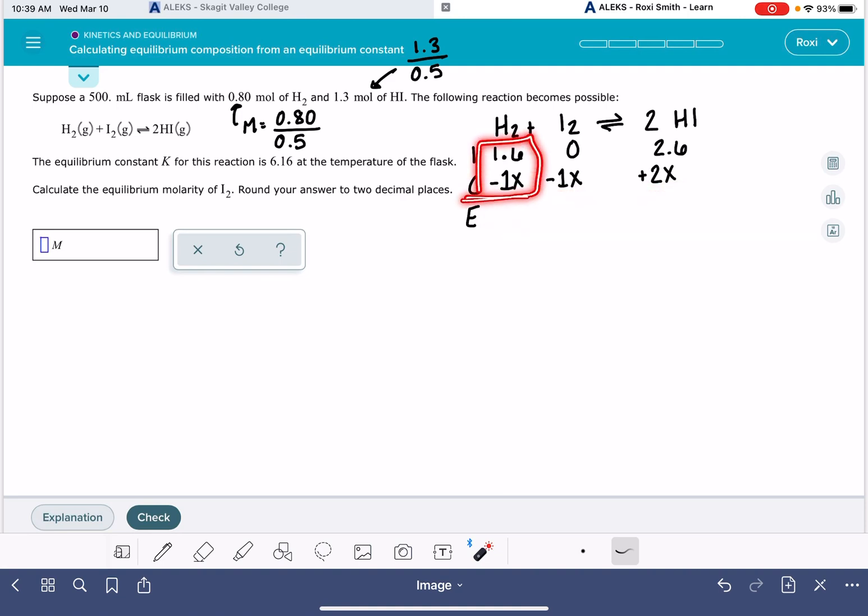So 1.6 minus 1X. So at equilibrium, we're going to have 1.6 minus X of our H2, negative X of our I2, and 2.6 plus 2X of the HI.